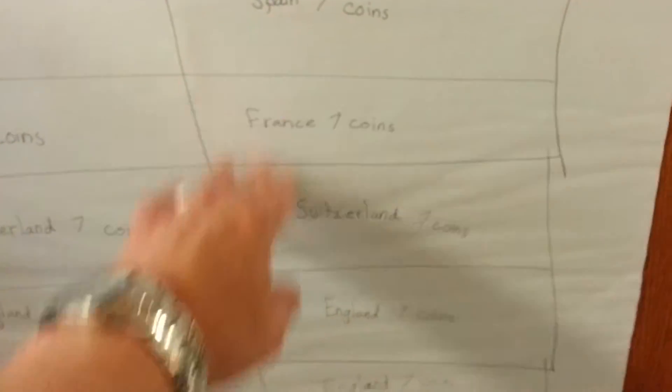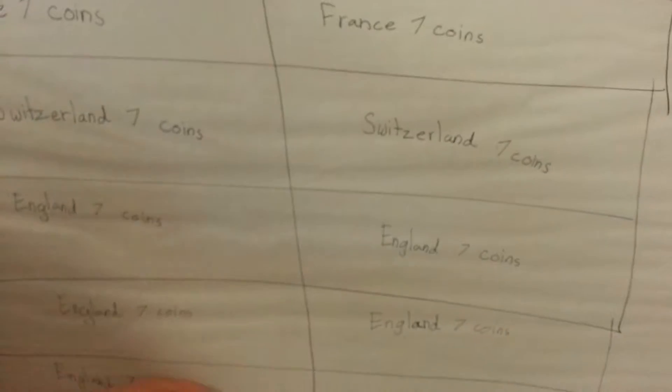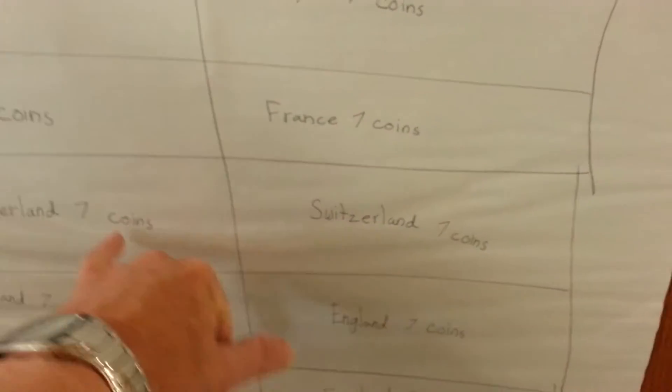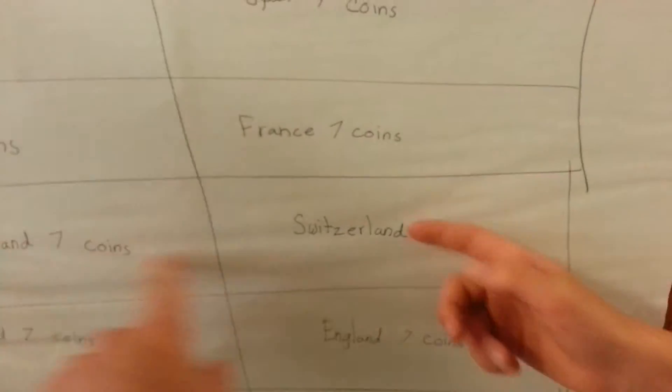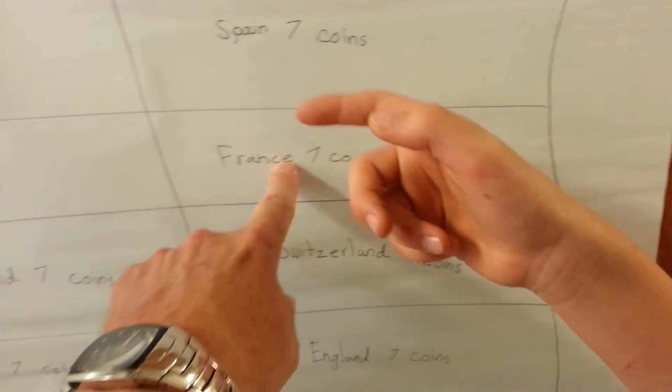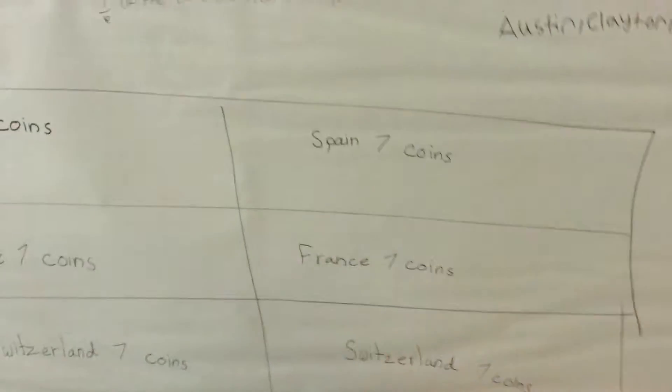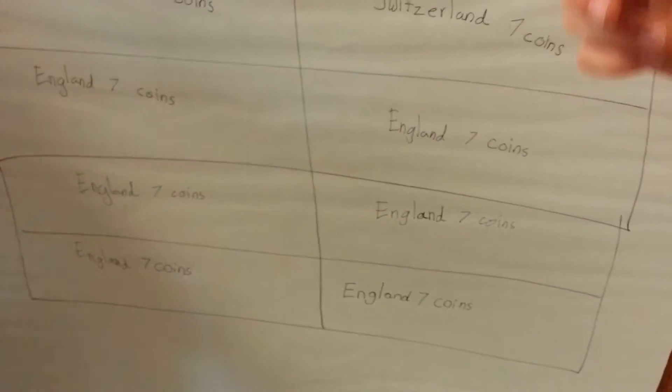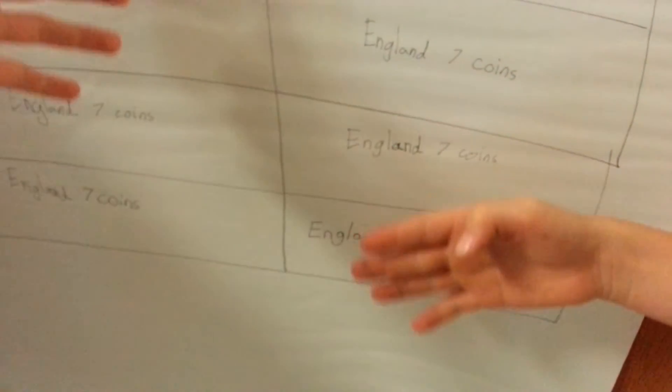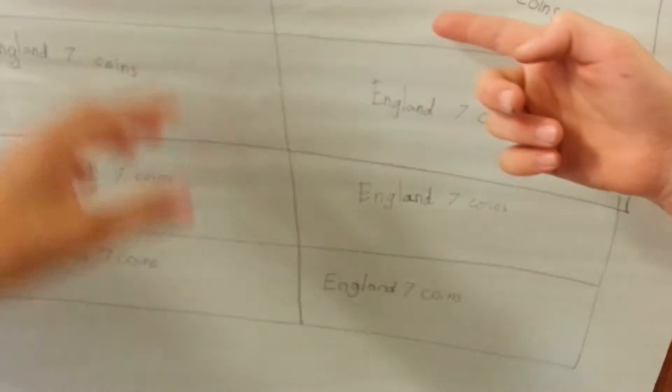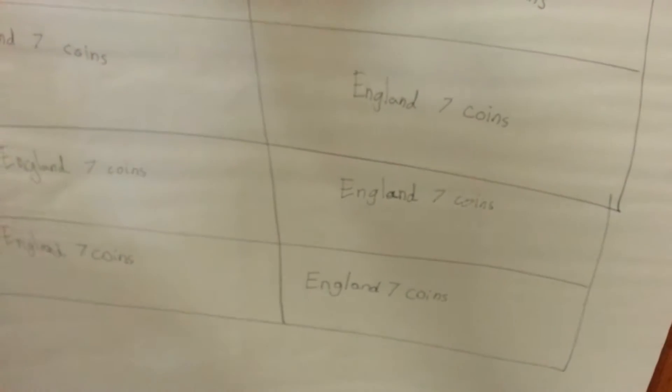One-twelfth is 42, so all these are 42 coins. Right. 42. And then if there's one-sixth, which is the same as two-twelfths, that means how many coins are from Switzerland? It's 14 coins. 14. And then 14, and then 7, 7, 42, and then all in all, it's 84 coins. Because you're just taking 7 times 12.